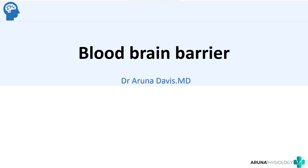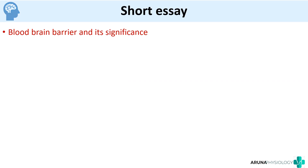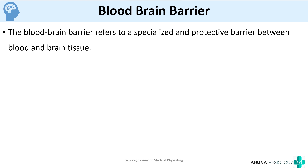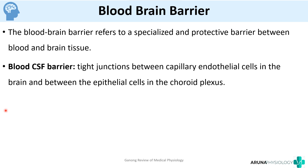In this video we're going to see about the blood-brain barrier. This question can be asked as a short essay — 'explain the blood-brain barrier and its significance' — or even as a one-word or MCQ question. By definition, the blood-brain barrier refers to a specialized protective barrier between the blood and brain tissue. There is also another barrier between blood and CSF.